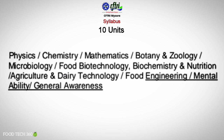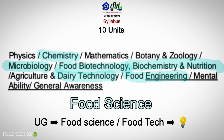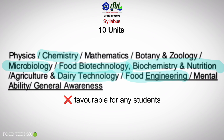Among these topics, Chemistry, Microbiology, Food Biotechnology, Biochemistry and Nutrition, Food Engineering, and Dairy Technology have content from the food science domain. UG students from food science or food technology can concentrate on these topics and score more. The syllabus is complex and not favorable to any single stream.